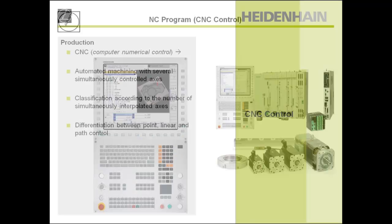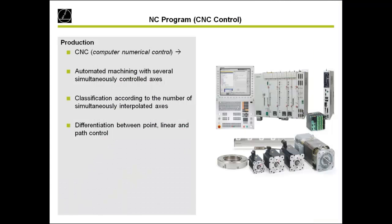On the CNC control — this is the Heidenhain product overview — we are not only developing and selling controls. We also sell motors, length measurement systems, angle measurement systems. We deliver everything around the mechanical machine. It is very important that the customer also uses the Heidenhain measurement systems, especially the length and angle measurement systems, if they want to do a really high-accuracy milling process.